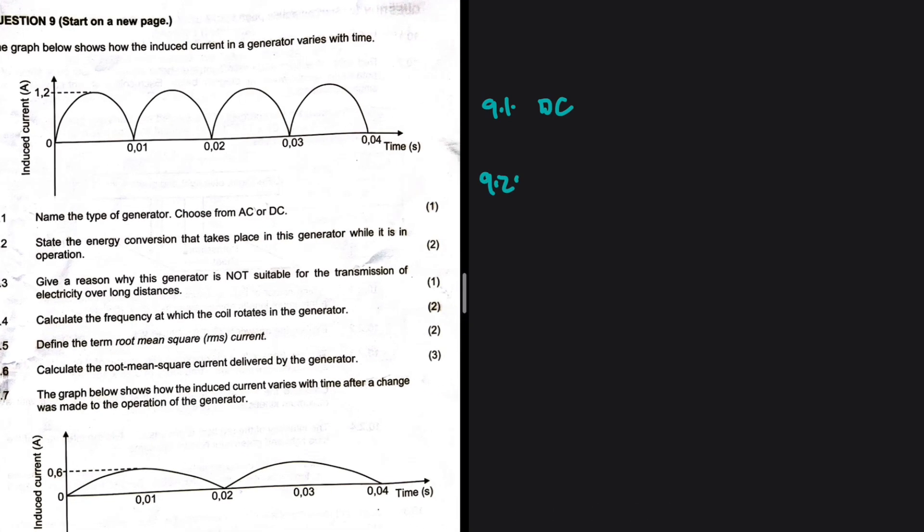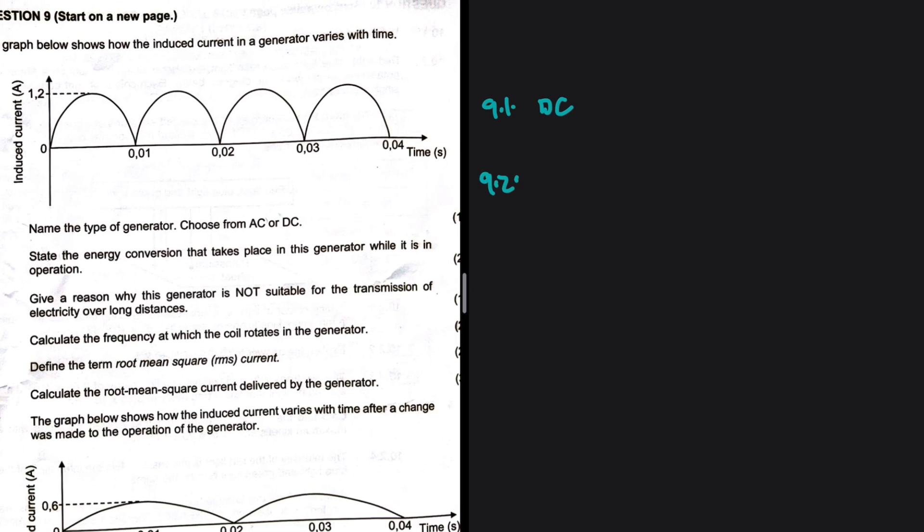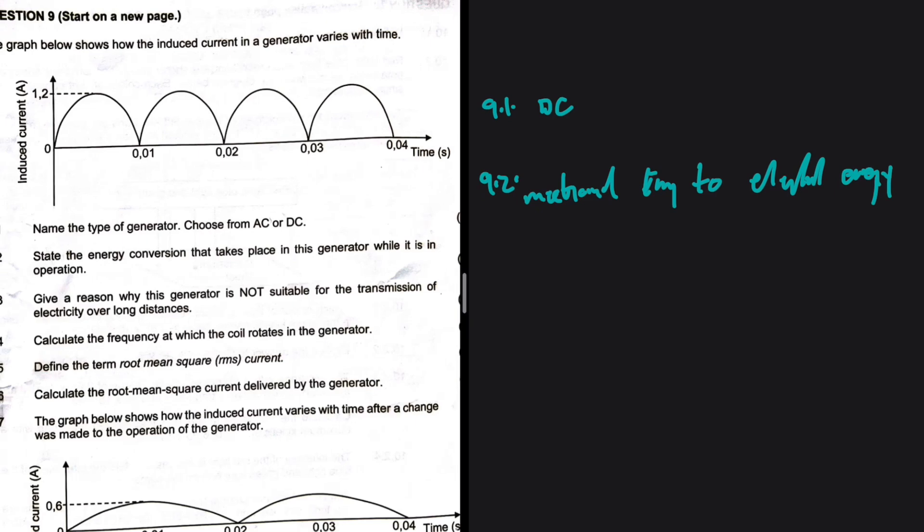Let's take a look at 9.2. State the energy conversion that takes place in this generator while it is in operation. So all generators, we have mechanical energy to electrical energy. That is what generators do. If it was a motor, it will be electrical energy to mechanical. But because it is a generator, we have mechanical to electrical. We are generating electrical energy through mechanical, and sometimes chemical.